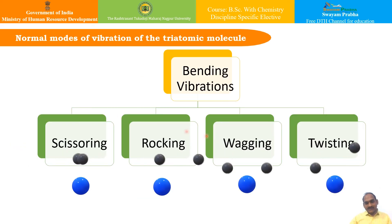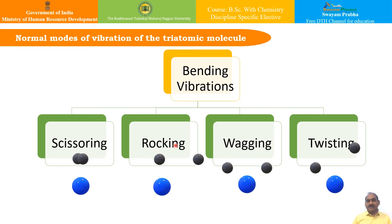For bending vibrations, there are four types: scissoring, rocking, wagging, and twisting. In bending vibrations there is deformation of bond angle with no change in bond length. In scissoring, the two atoms approach in the same plane. In rocking, the movement of atoms occurs in the same direction and in the same plane. In wagging, two atoms move up and down in the plane with respect to the central atom. In twisting, one atom moves up in the plane while the other moves down with respect to the central atom.